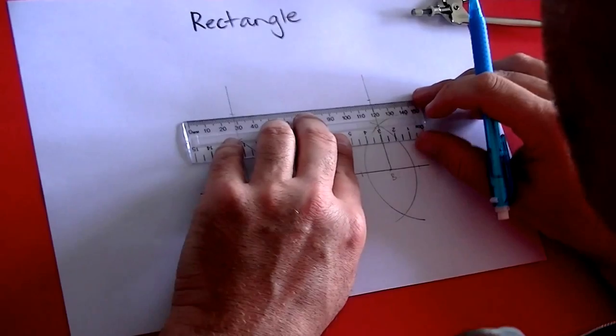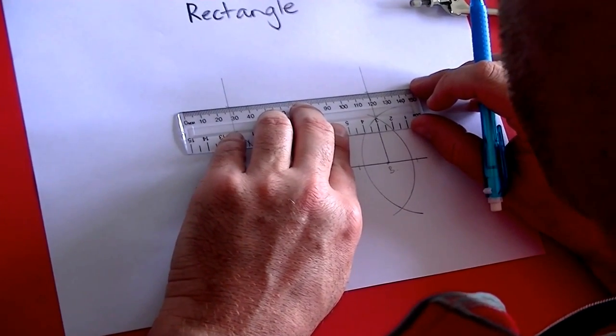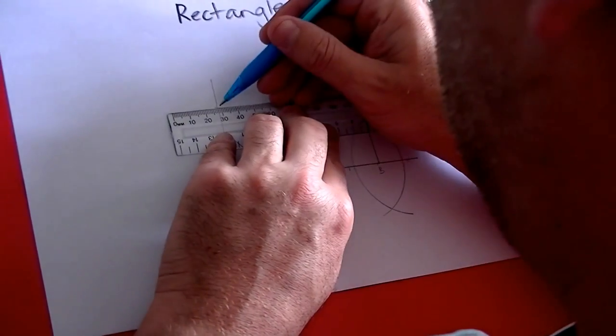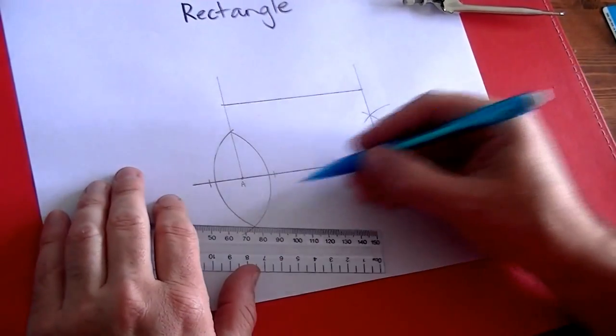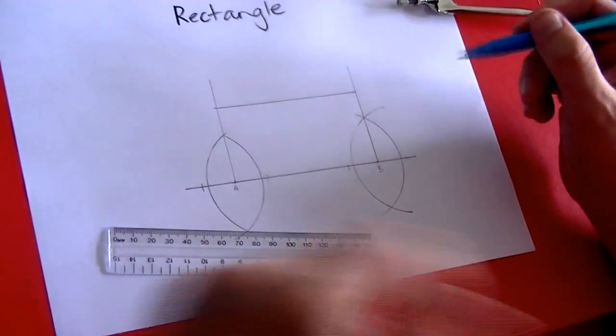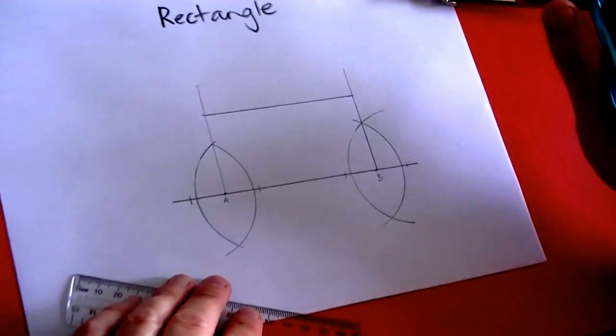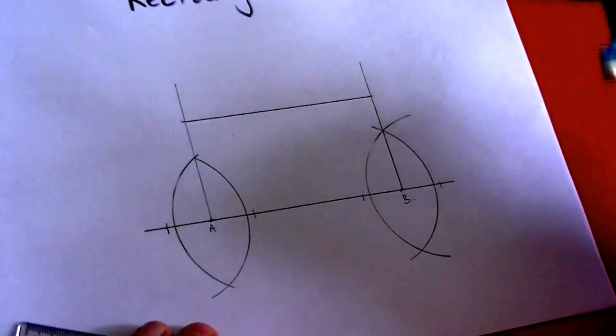And then I just lean across it. And I run it from mark to mark. And there we have ourselves a nice, perfect rectangle.